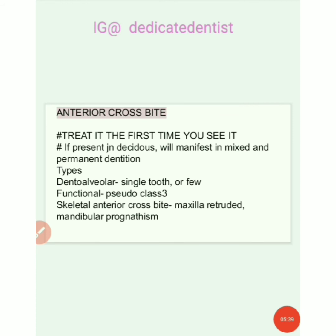For dental alveolar crossbites, we use a Catalan's appliance, a tongue blade — though patient compliance greatly affects the outcome — and a bite plate. For functional anterior crossbite, if the problem is because of high spots causing the mandible to shift forward, we treat the cause accordingly. For skeletal crossbite, where the problem is in the maxilla and mandible, we make use of myofunctional or orthopedic appliances.